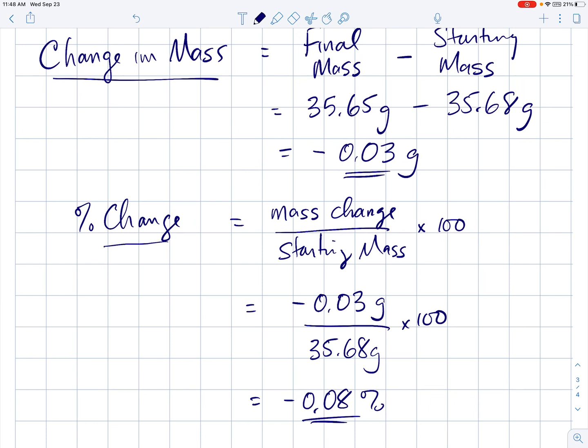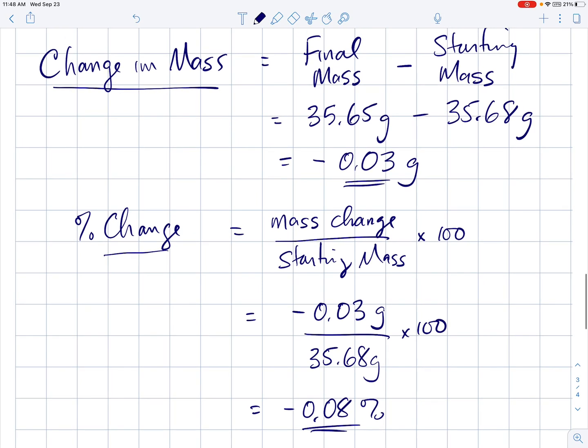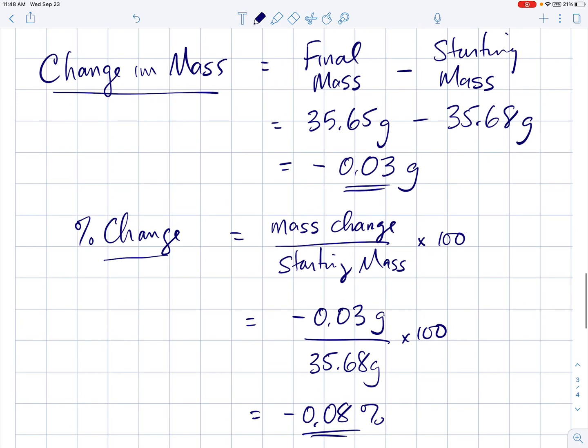All right, so that's how you calculate a change in mass, the final minus the starting mass, and how you'd find the percent change, where you take the mass change and divide by the starting mass. Now let's just talk about what this means before we leave you here. The point of the experiment was to find out if mass changes during a chemical reaction. Well, what would be your answer? Did the mass change?